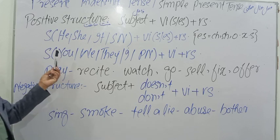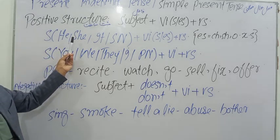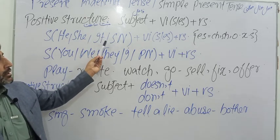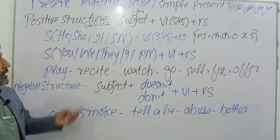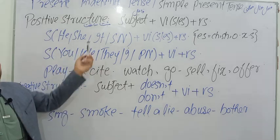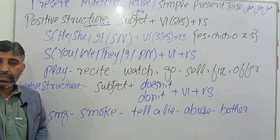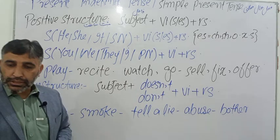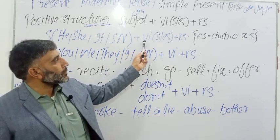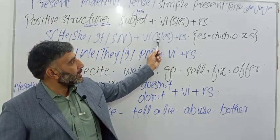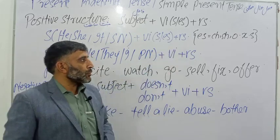So when the subject is he, she, it, or a singular noun, we add S or ES to the verb. But when the subject is you, we, they, I, or a plural noun, we use only the verb first form — no S or ES is added.